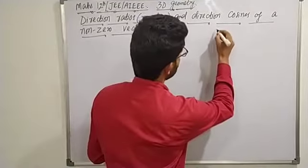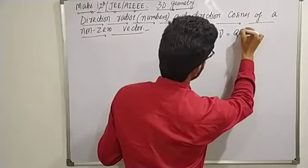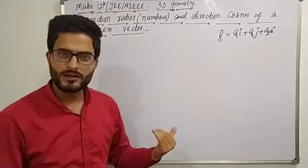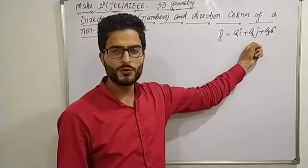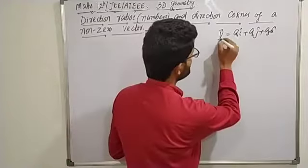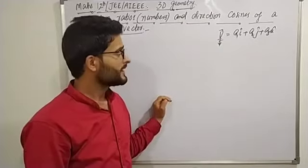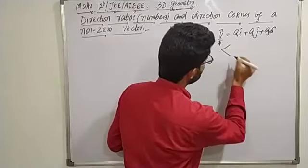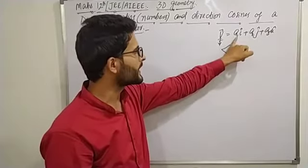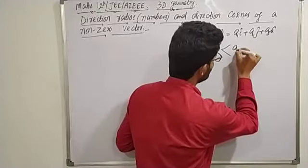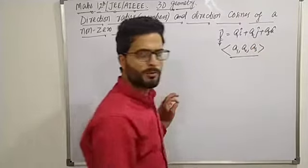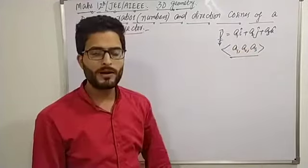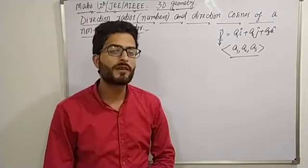So if you have a proper vector V which has been expressed in terms of its components as A1i + A2j + A3k, then the direction ratios of this vector V — also called direction numbers — are nothing but the ordered three-tuple of its scalar components. What are the scalar components? A1, A2, A3. So the ordered three-tuple of A1, A2, and A3 is the direction ratios or direction numbers of a non-zero vector.